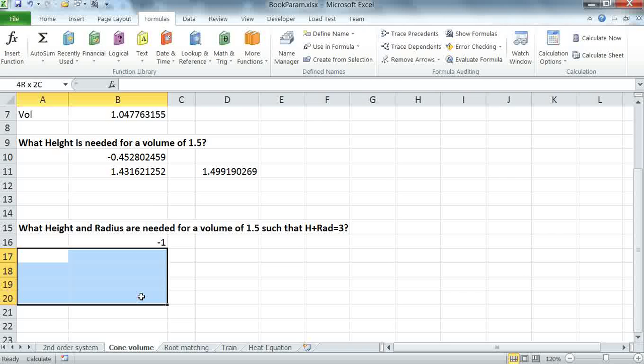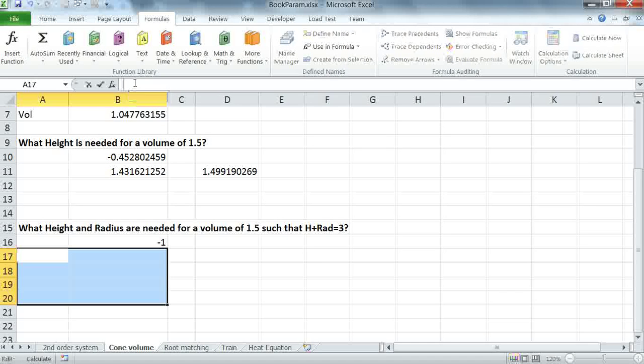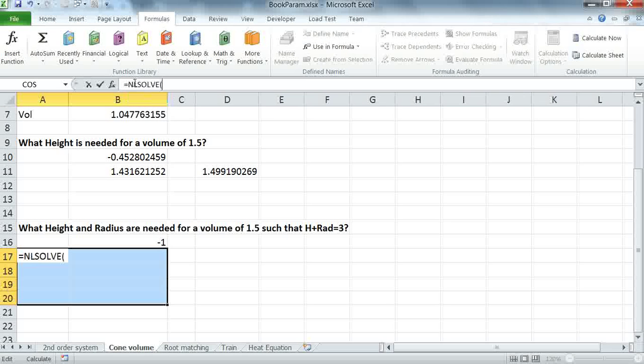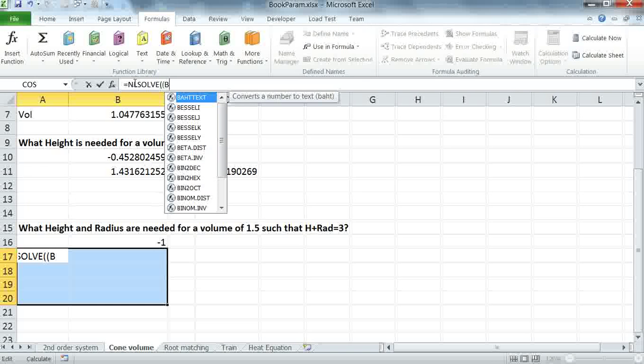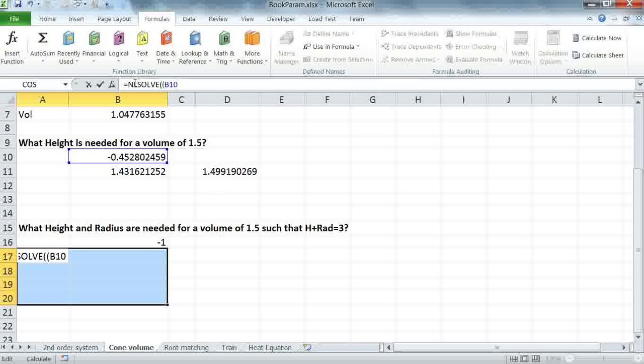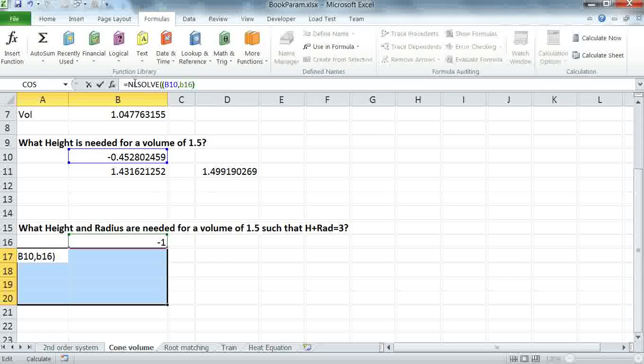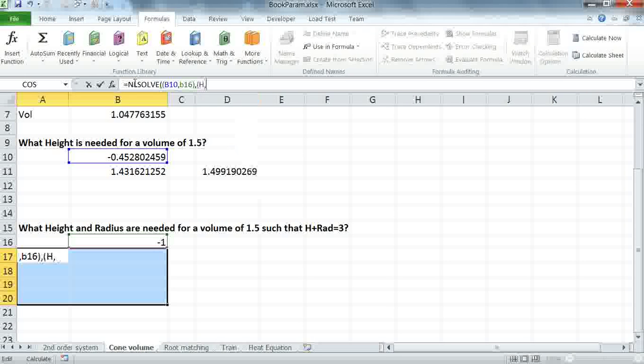I'm going to run this as an array formula because I have two variables, and I'm also going to use the formatting option. So my arguments to the solver are the constraints defined in B10 and B16. Notice that I've surrounded them with parentheses because I want to use the union operator in Excel to combine them into one reference, and then my variables are the height and radius.